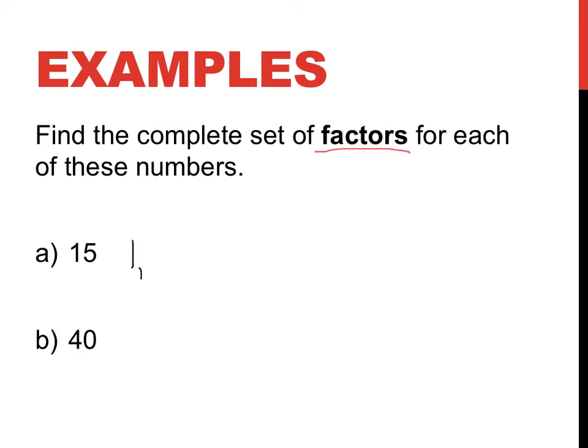So does 2 go into 15 evenly? 2, 4, 6, 8, 10, 12, 14. Oh, no, there'd be a remainder, so that's not one. 3, yep, 3 fives are 15. That goes in evenly. 4 twos is 8, 4 threes is 12, 4 fours is 16. No, not evenly. 5, yep, 5 goes in.